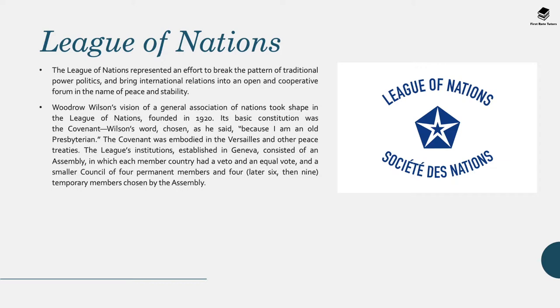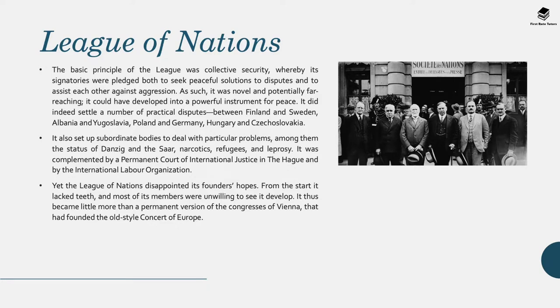The League's institutions, established in Geneva, consisted of an assembly where each member country had a veto and an equal vote, and a smaller council of four permanent members — later six, then nine temporarily chosen by the assembly. The basic principle of the League was collective security, whereby its signatories pledged both to seek peaceful solutions to disputes and to assist each other against external aggression. As such, it was seen as a really novel and potentially very far-reaching body.